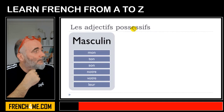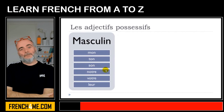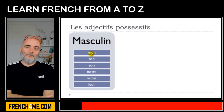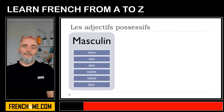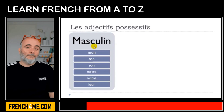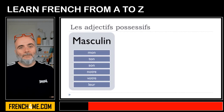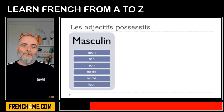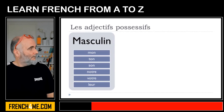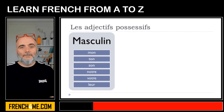In English the possessive adjectives are: my, your, his, her, our, your, their. But in French we have differences between masculine, feminine and plural. The key thing to remember is that in French we don't decide whether it's masculine, feminine or plural according to the subject — we put the form according to the word it is connected to.